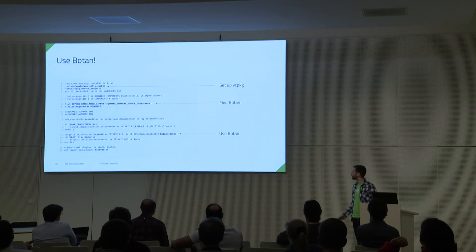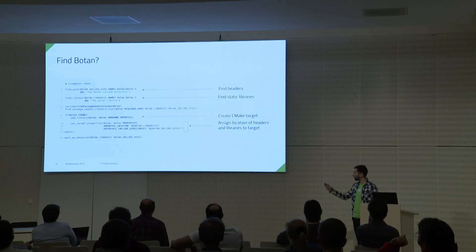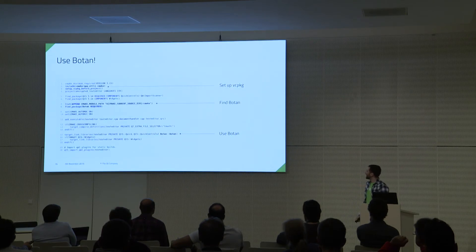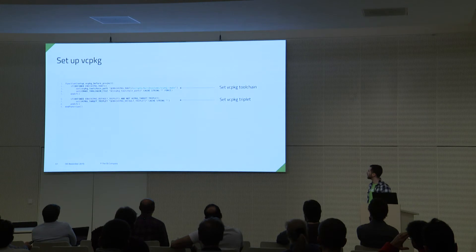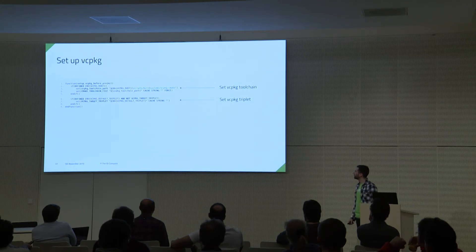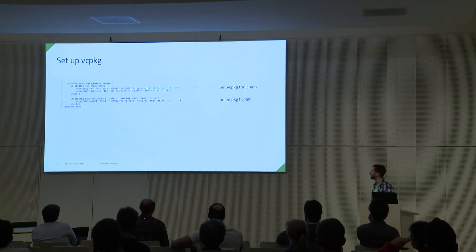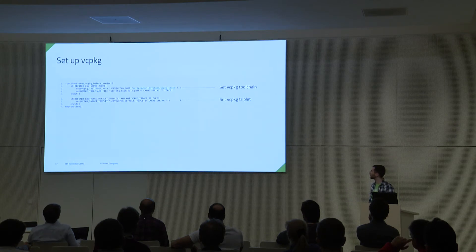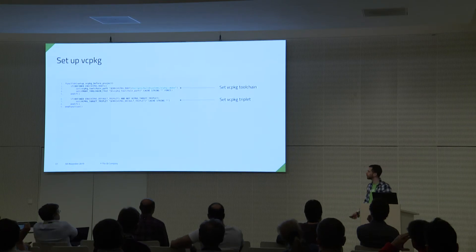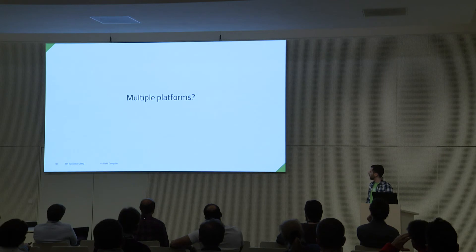To set up vcpkg, inside the helper utils CMake file, you need to tell CMake where to find vcpkg, and that is done in two ways. You first specify the toolchain file that vcpkg provides, and the triplet. Here you basically pick them up from the environment variables VCPKG_ROOT and VCPKG_DEFAULT_TRIPLET, which I set when I build my project. So we've covered the third-party part and the static part. What about multiple platforms?